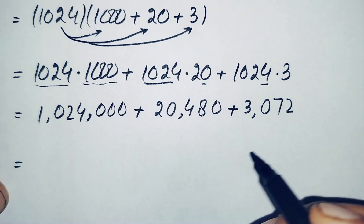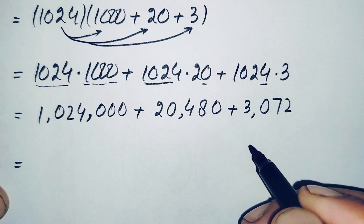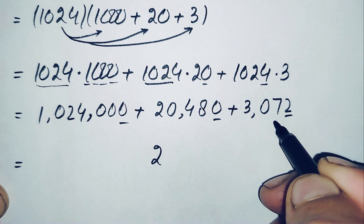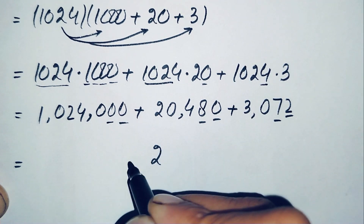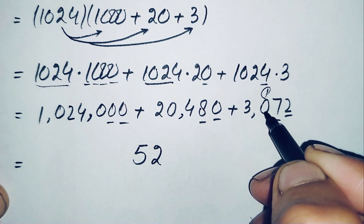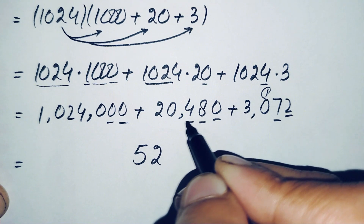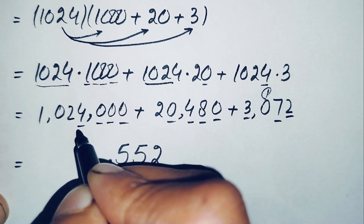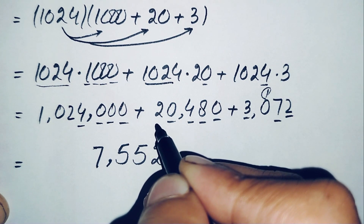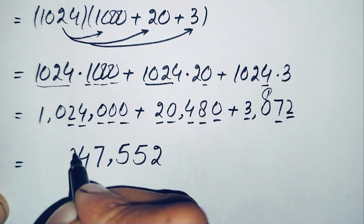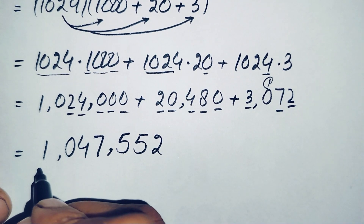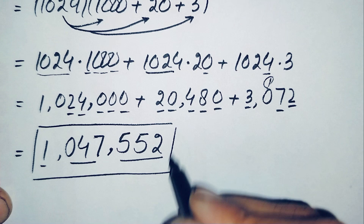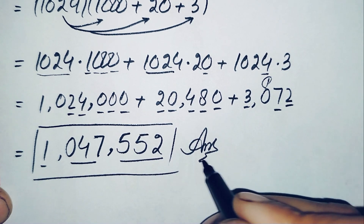Now we add all three partial products. Starting from the ones position: 2 plus 0 plus 0 is 2. Tens: 7 plus 8 plus 0 is 15, write 5 carry 1. Hundreds: 0 plus 4 plus 0 plus 1 carry is 5. Thousands: 3 plus 0 plus 4 is 7. Ten-thousands: 2 plus 2 is 4. Hundred-thousands: 1. So the final answer is 1,047,552.